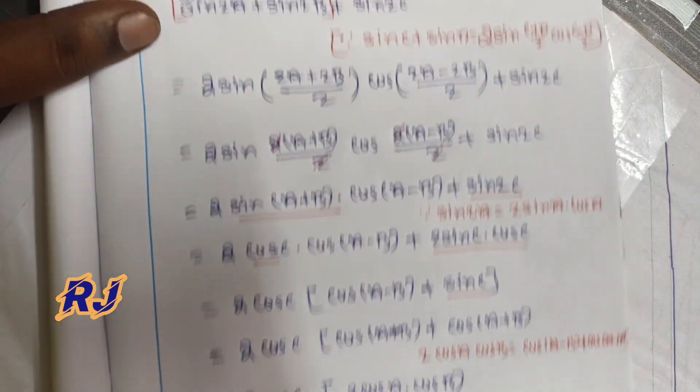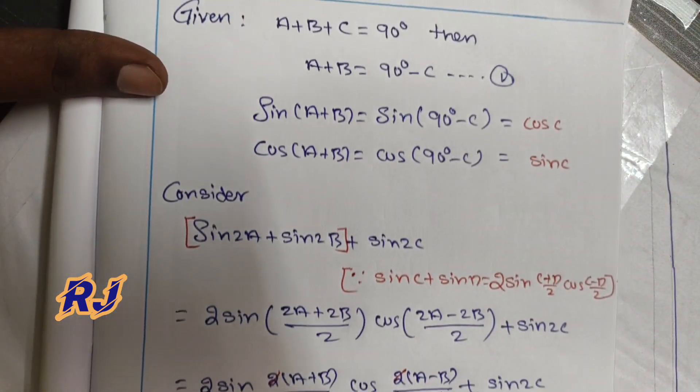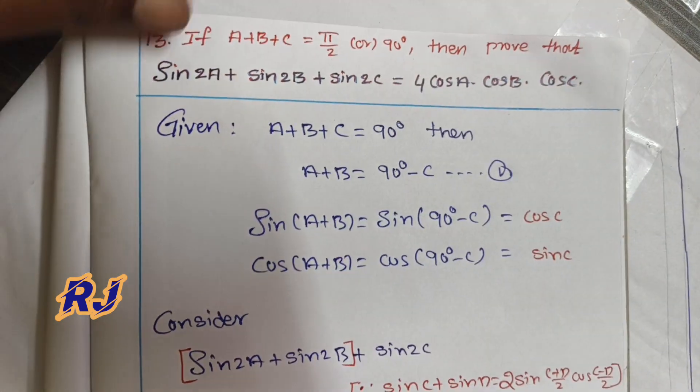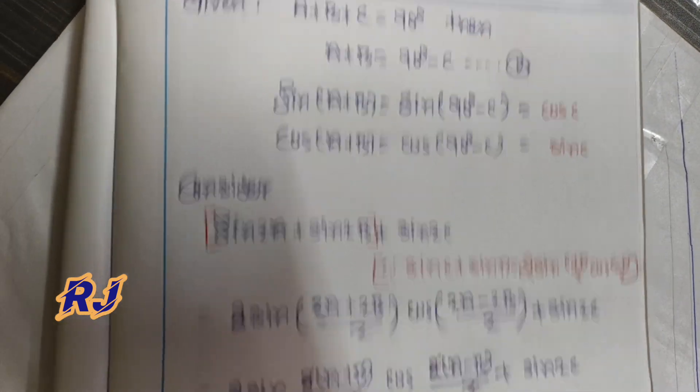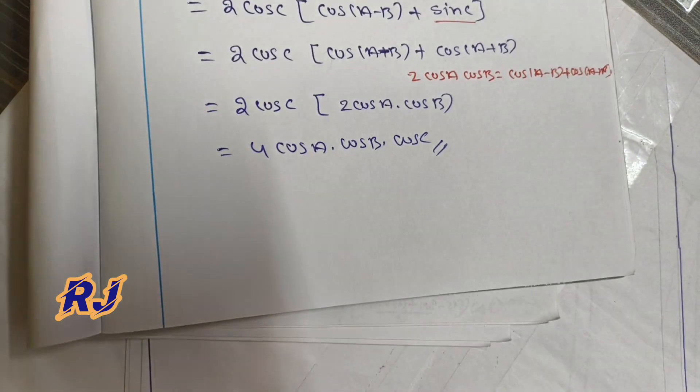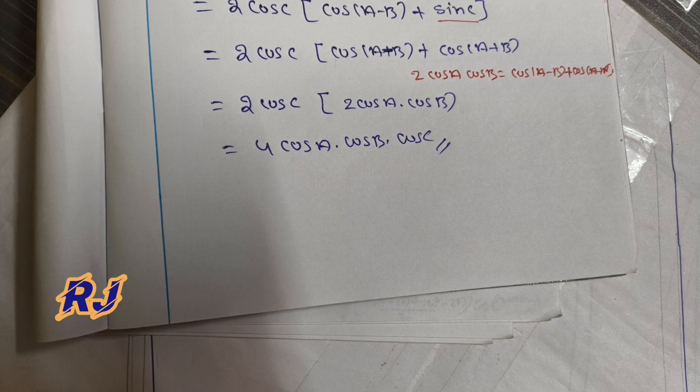Therefore LHS is equal to RHS. The identity is proved. Thank you.